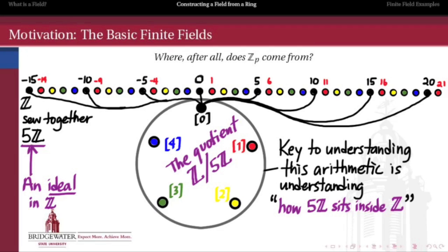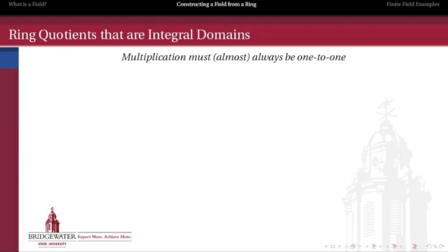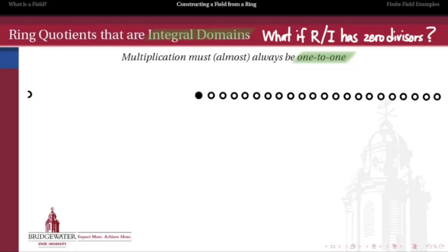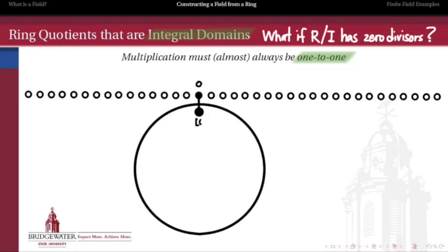The role of 5Z can be played in a more general setting by any two-sided ideal inside of our ring, and the role of this clock field is going to be played by the quotient of our ring by that ideal. First we want to look at what it takes for the quotient of a ring to be an integral domain — a ring in which there are no zero divisors. We're going to take the opposite approach and ask: what has to be true if the quotient of R by an ideal I has a zero divisor?